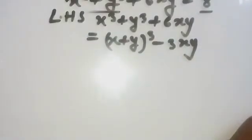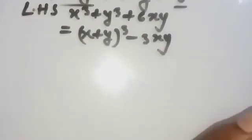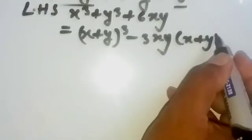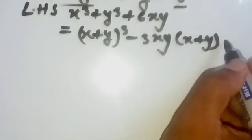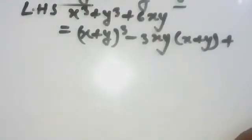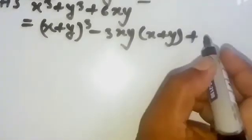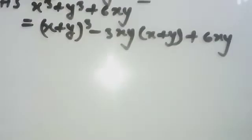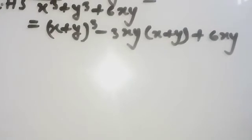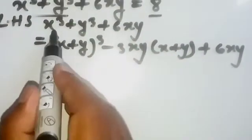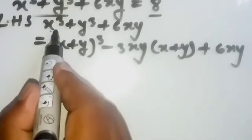B into x plus y plus z. What is that? That is 6xy. This is the a squared plus b squared formula.